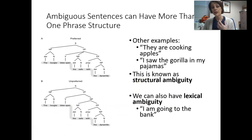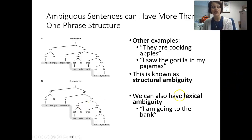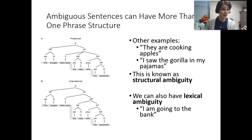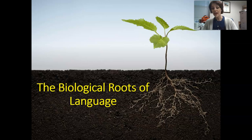There are other types of ambiguities within sentences. Words themselves can be ambiguous — this is lexical ambiguity. For example, 'I'm going to the bank' — do you mean the financial bank or the river bank? Now, with the time we have, we're going to talk about the biological roots of language.